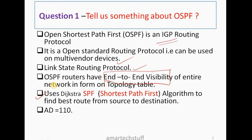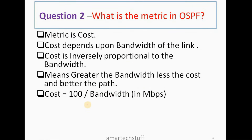Another important point: what is the AD value of OSPF? The routes learned via OSPF have an Administrative Distance value of 110. Always remember this value — 110. When preparing for any interview, it is very important to remember the AD value of each and every routing protocol. For OSPF, the AD value is 110.